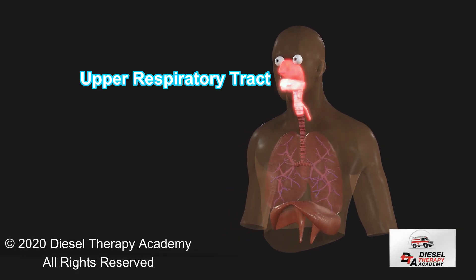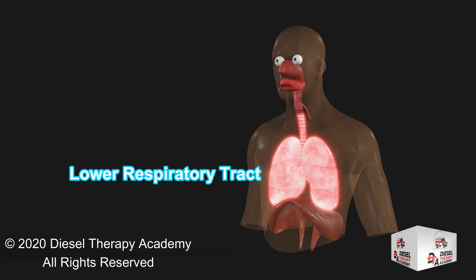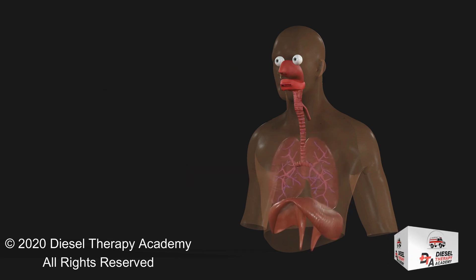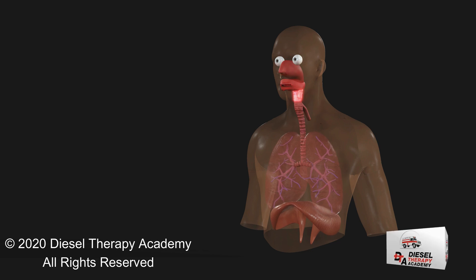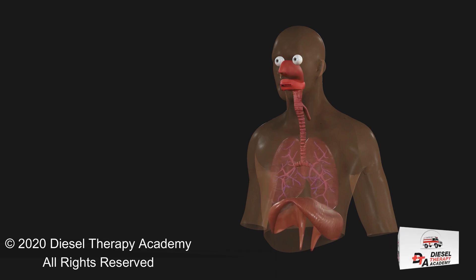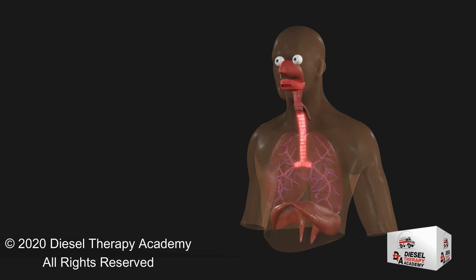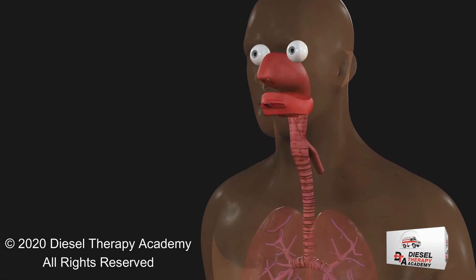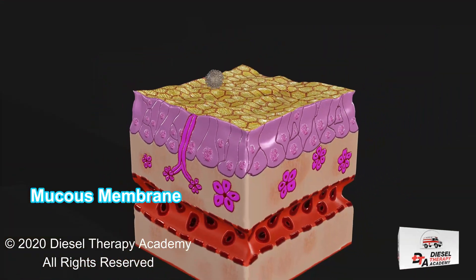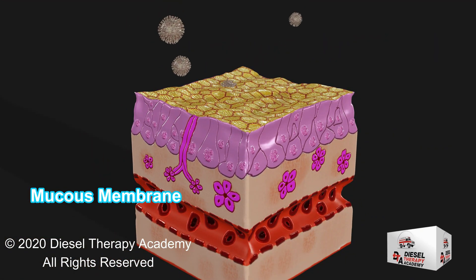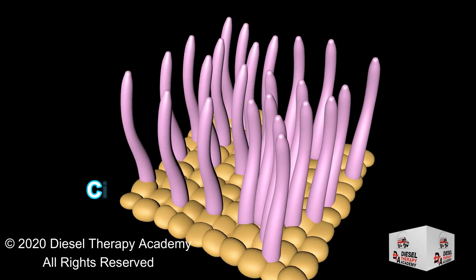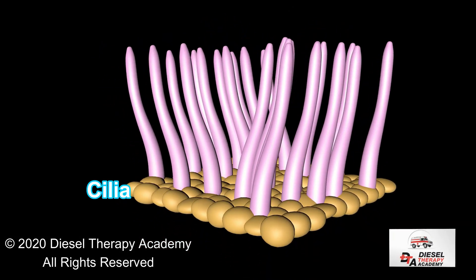The respiratory conducting passages are divided into the upper respiratory tract and the lower respiratory tract. The upper respiratory tract includes the nose, pharynx, and larynx. The lower respiratory tract consists of the trachea, bronchial tree, and lungs. These tracts open to the outside and are lined with mucous membranes. In some regions, the membrane has hairs that help filter the air. Other regions may have cilia to propel mucus.